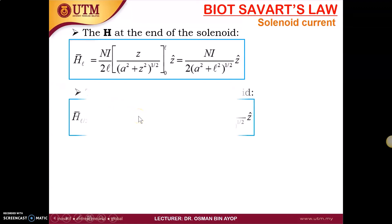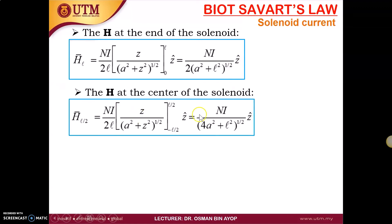The second case is H at the center of the solenoid. At the center, we have to do integration from negative l over 2 to l over 2. This is our solution.